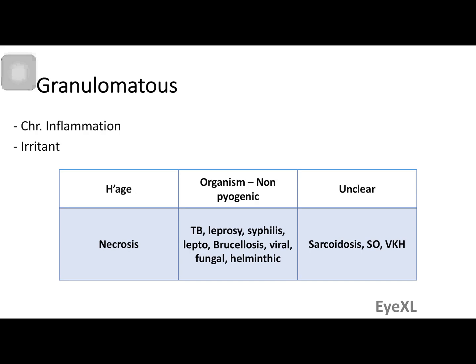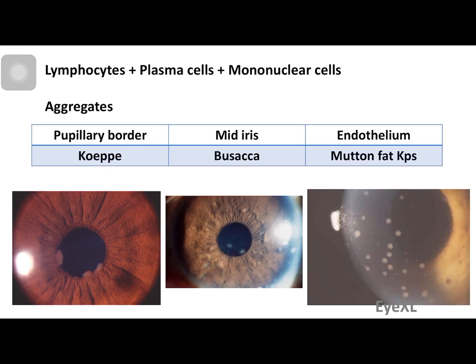Certain conditions — sarcoidosis, sympathetic ophthalmitis, and Vogt-Koyanagi-Harada (VKH) disease — have unclear etiology for their granulomatous reaction. In granulomatous uveitis, there is an aggregate of lymphocytes, plasma cells, and mononuclear cells, forming nodules. These nodules commonly form at the iris. Aqueous convection currents create a transition zone at the pupil, causing most deposition to occur there — nodules at the pupillary margin are called Koeppe nodules, those at the mid-iris are Busacca nodules.